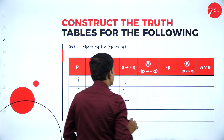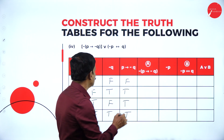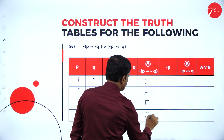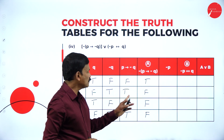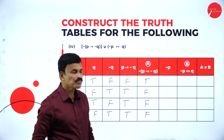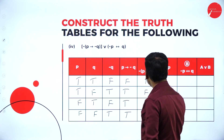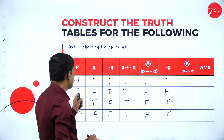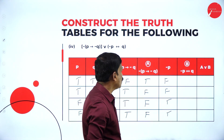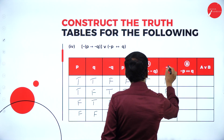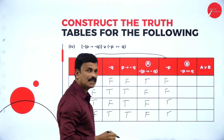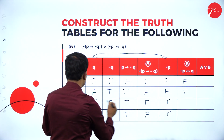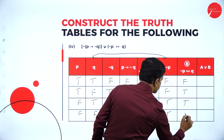Now write the negation of P conditional to negation Q: for F it is T, for T it is F, for T it is F, for T it is F. Negation of P: for T it is F, for T it is F, for F it is T, for F it is T. Negation P biconditional to Q: false and true is false, false and false is true, true and true is true, true and false is false.